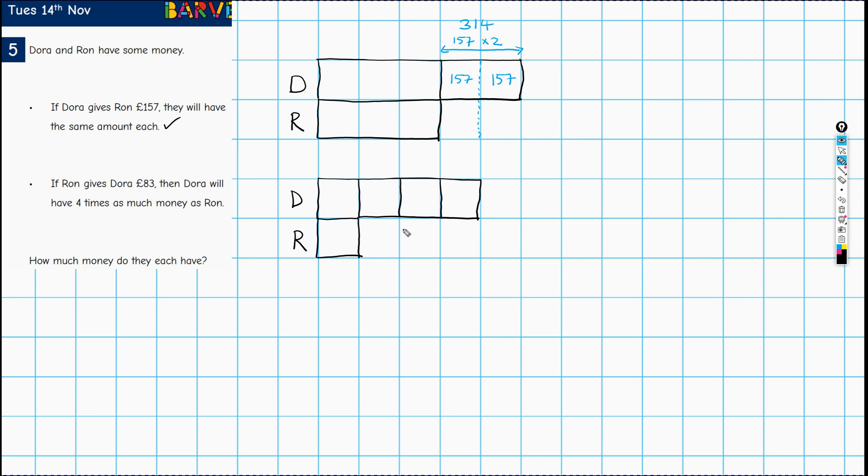But what would it take to achieve that? Well, Ron would have to give Dora 83 pounds. What would that look like? So this is just an arbitrary size here. Let's say that that's 83. So Ron has this. If he took this away and gave it to Dora, she would have four times the amount, which means she doesn't actually have that. So I need to take that away from this amount that we've given Dora here.